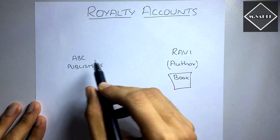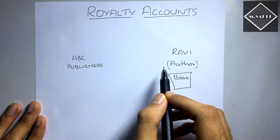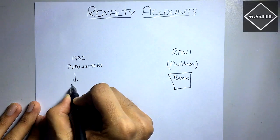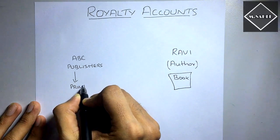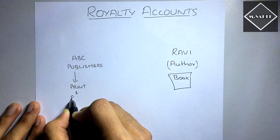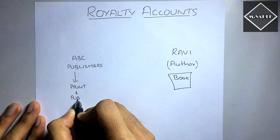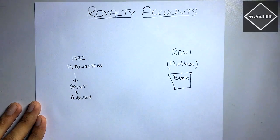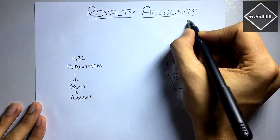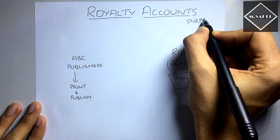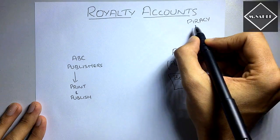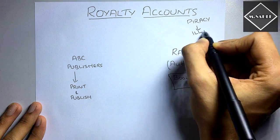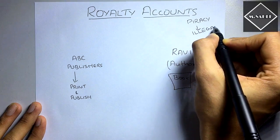Now he comes to an agreement with ABC Publishers that they are going to print and publish this book. But can they just go and directly publish this book? Of course not. They cannot just go and publish this book. If they do that, then that would be piracy, right. Illegally copying something is piracy and that's illegal. You can go to jail for that.